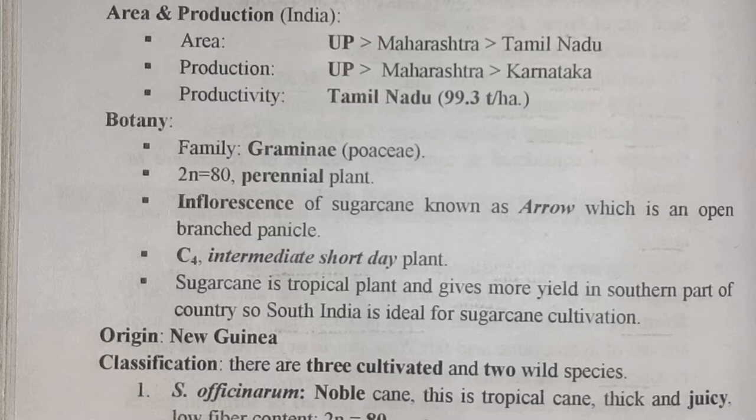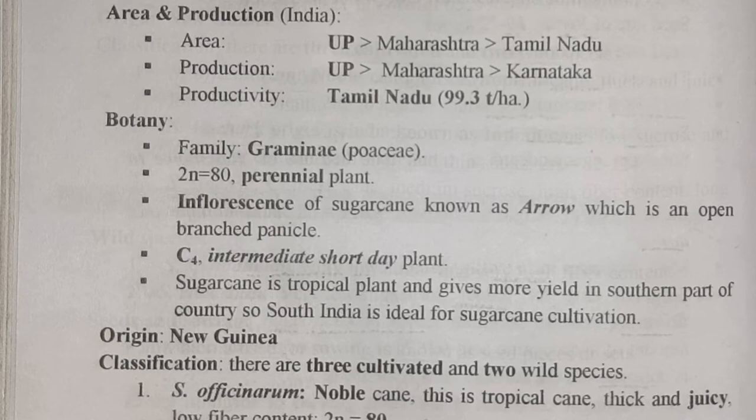Botany: sugarcane belongs to family Gramineae, that is Poaceae. Its chromosome number 2n is equal to 80. It is a perennial plant. Its inflorescence is known as 'arrow', which is an open branched panicle — this is an important point. It is a C4 intermediate short-day plant. Sugarcane is a tropical plant and gives more yield in the south part of the country, so south is ideal for cultivation. Its origin is in New Guinea.